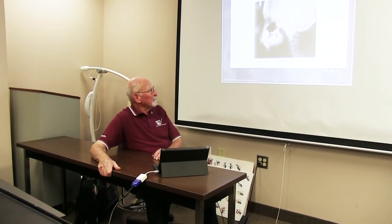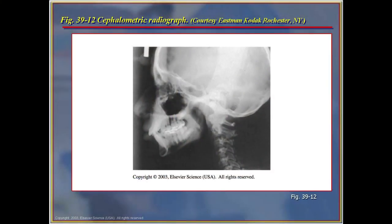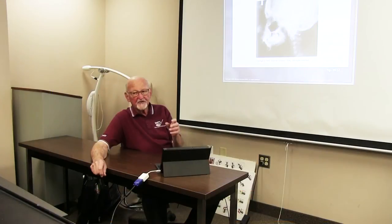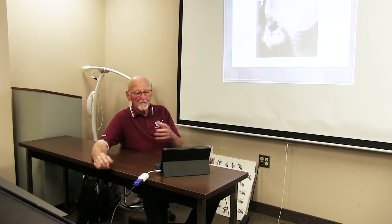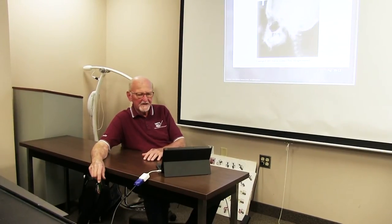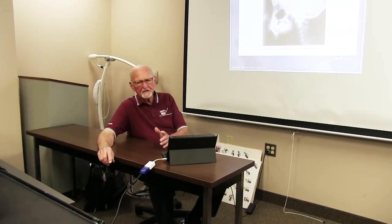The cephalometric picture shows the head and the entire skull and both jaws. It is used primarily in dentistry in the orthodontic department. As we're beginning to set up for orthodontic treatment and movement of teeth, we want to evaluate whether the upper jaw is forward or the lower jaw is backward, and what would be cosmetically and functionally the best way to approach the patient.